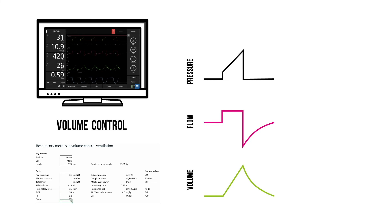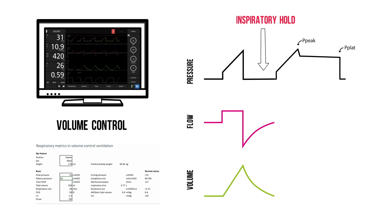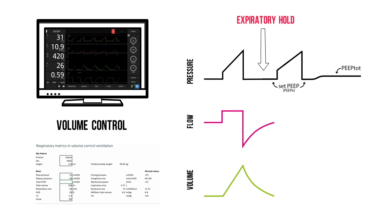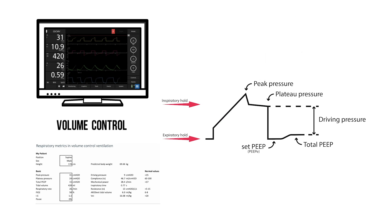Now you're good to go. First, perform an inspiratory hold and note the plateau pressure. Second, perform an expiratory hold and note the total PEEP, which is the extrinsic or applied PEEP together with the intrinsic PEEP. Enter them in Venticalc and you get all the respiratory mechanics in order to ensure safe mechanical ventilation.